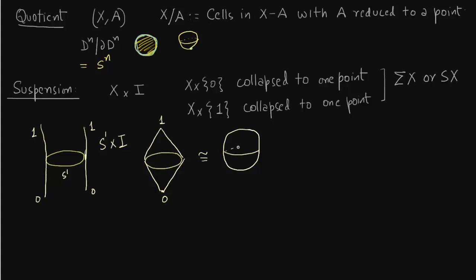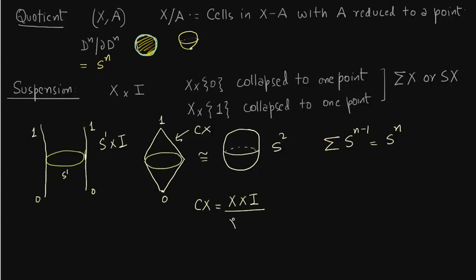Notice that this is equivalent to S². In general, the suspension of S^(n−1) gives you S^n, just as the suspension of S¹ gave us S². Just take the upper hemisphere — it is called the cone of X. Precisely, X times 1 modulo X times 0 is the upper cone. We draw just the upper cone — that is the cone.